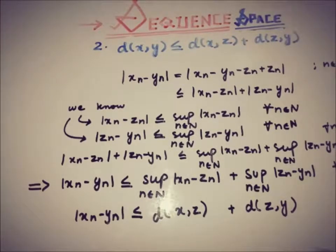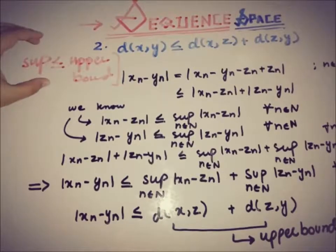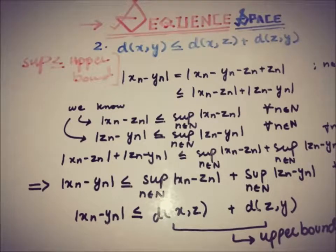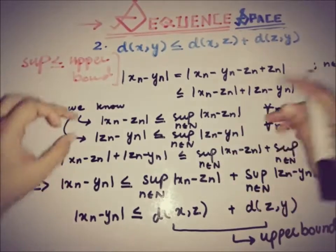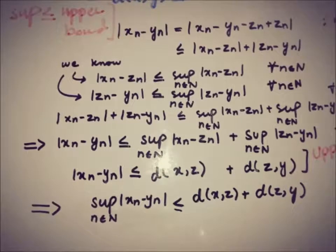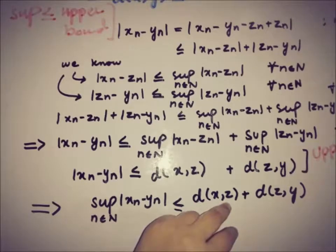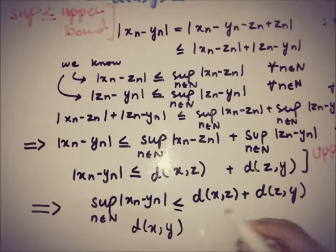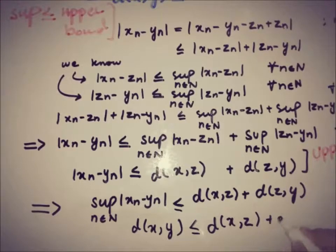This sum is an upper bound for |x_n minus y_n|. By definition, the supremum is the least upper bound, so the supremum of |x_n minus y_n| is smaller than or equal to d(x,z) plus d(z,y). We have proved that d(x,y) is less than or equal to d(x,z) plus d(z,y), which is the triangle inequality. So the third condition is also satisfied.